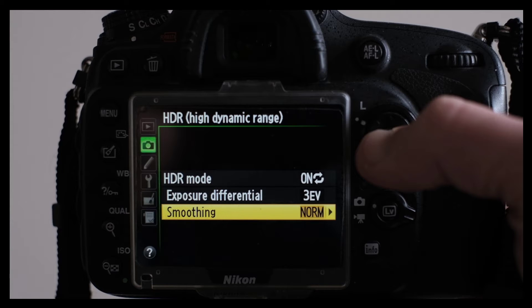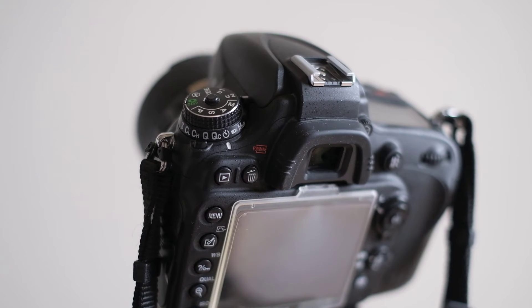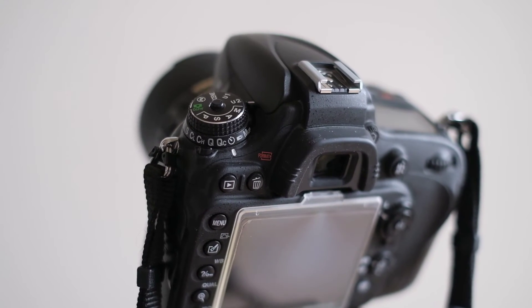If you had very large contrast differences, you may need more smoothing than in calmer photos. Note that you can combine exposure compensation with HDR. This way you can shift the entire exposure up or down the exposure scale, and you're likely to want to do that. This is actually it regarding the settings.